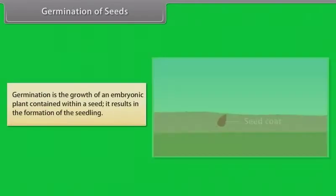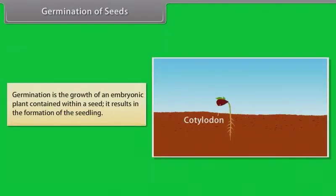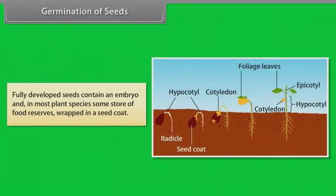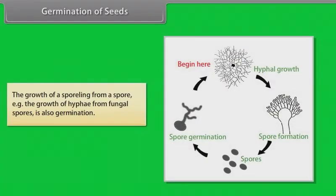Germination is the growth of an embryonic plant contained within a seed; it results in the formation of the seedling. Fully developed seeds contain an embryo and, in most plant species, some store of food reserves wrapped in a seed coat. The growth of a sporeling from a spore — for example, the growth of hyphae from fungal spores — is also called germination.